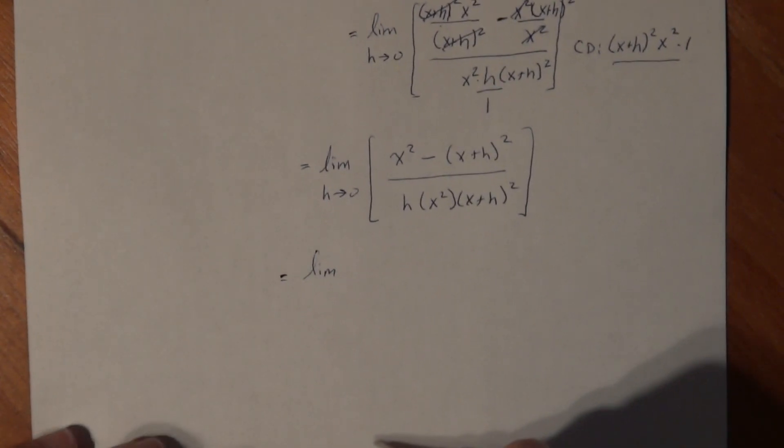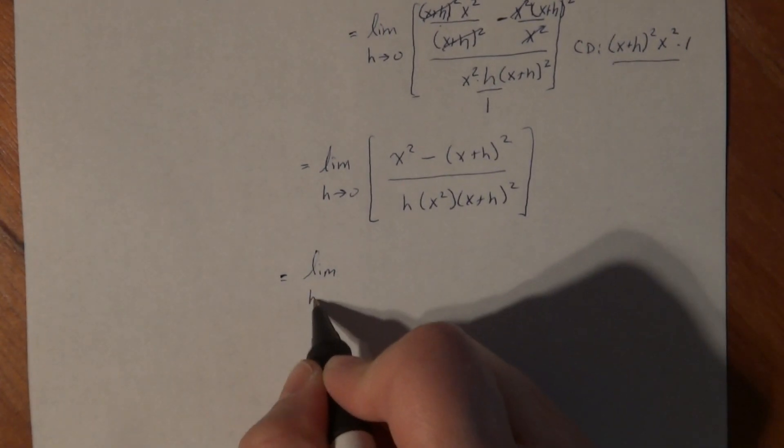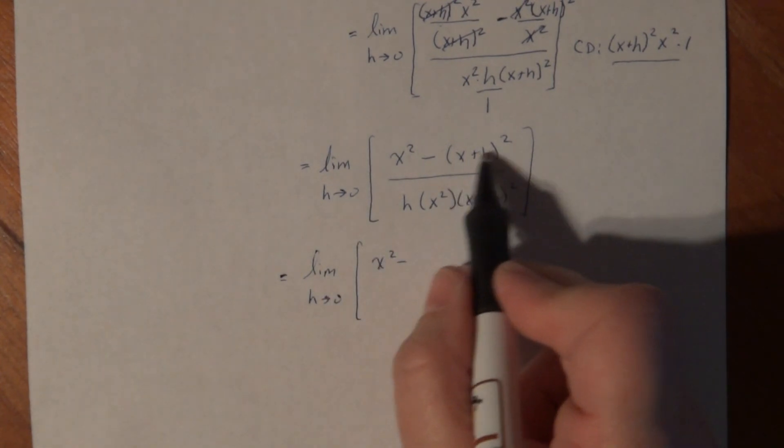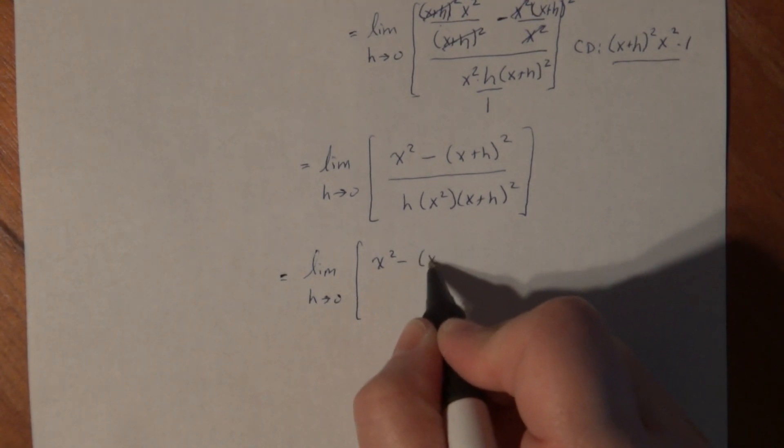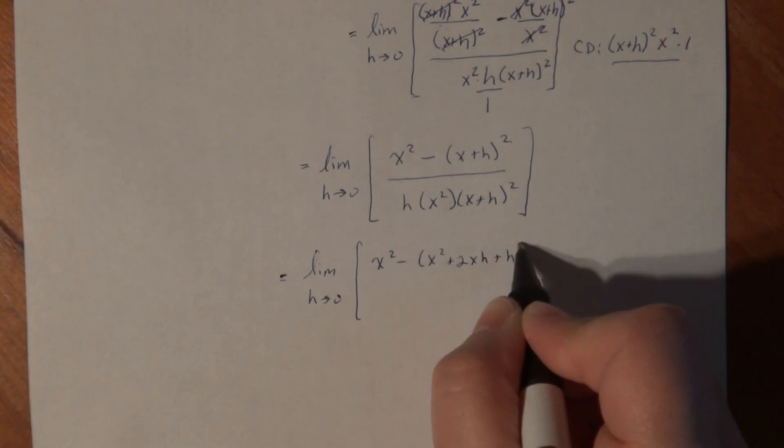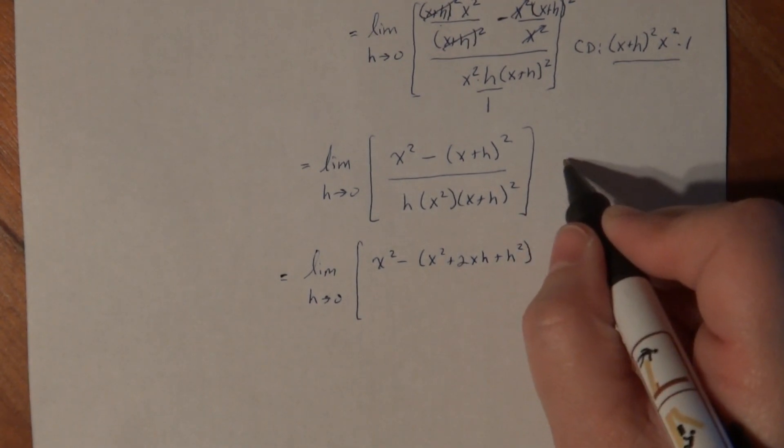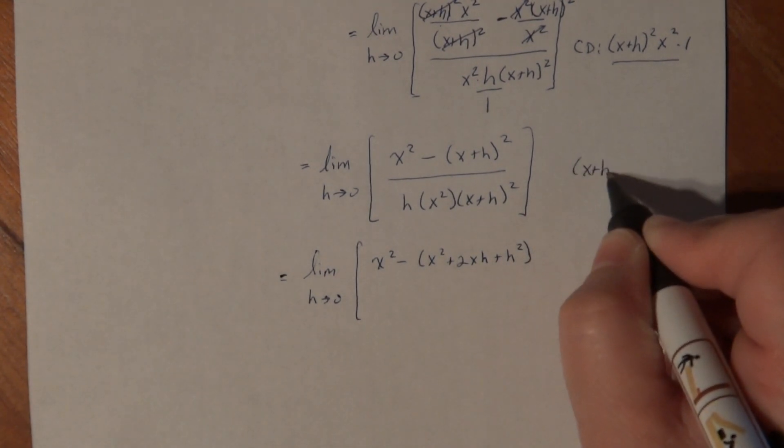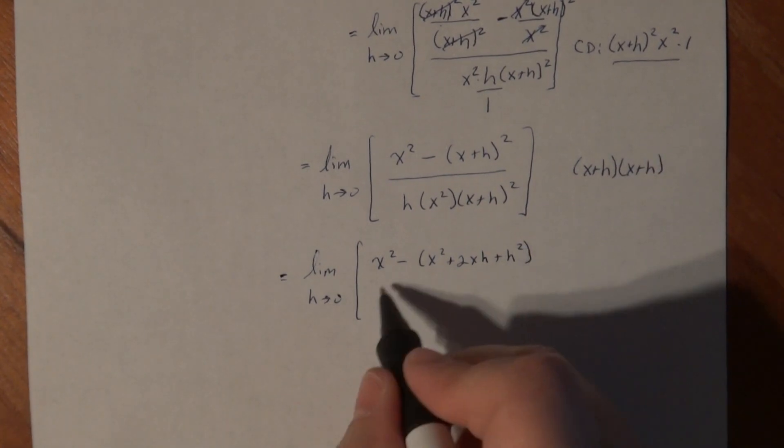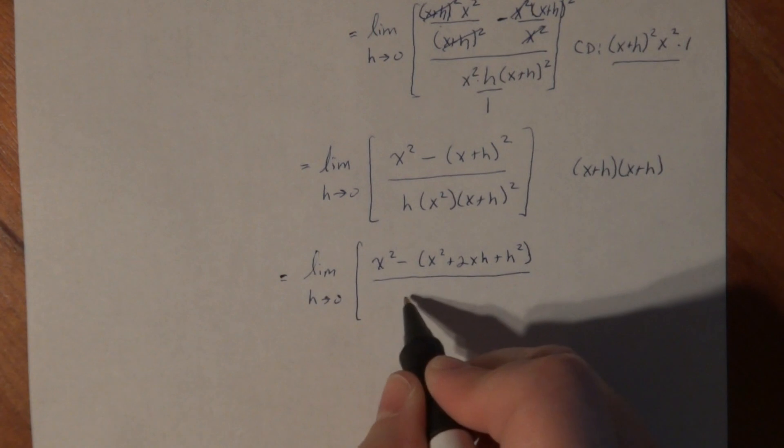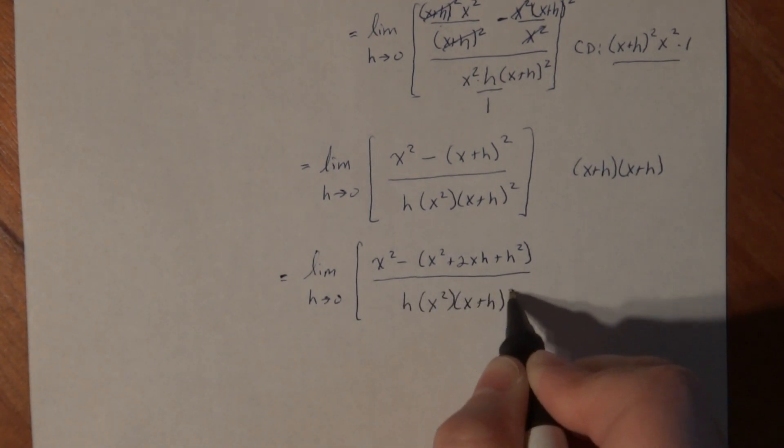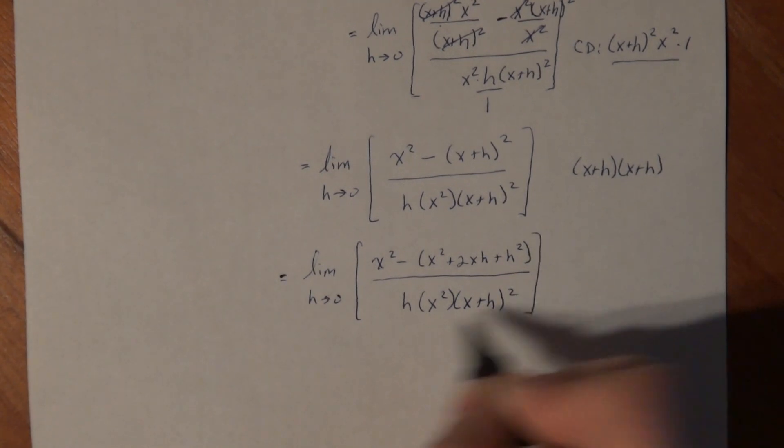Alright, limit as h goes to 0 of x squared. Now I'm going to multiply out x plus h squared: x squared plus 2xh plus h squared. If you don't believe me, go off to the side on your own paper and multiply out x plus h times x plus h. Check yourself. Start practicing doing that. That's going to help you in the long run to confirm things for yourself instead of always making your teacher do it.